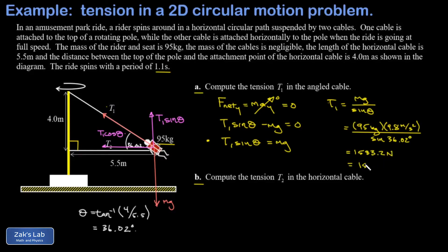Part b involves the uniform circular motion aspect of the problem. For this rider to be moving in a horizontal circular path, the rider must be accelerating toward the center of curvature. The magnitude of that acceleration is given by v squared over r, but that's not the most convenient form here.